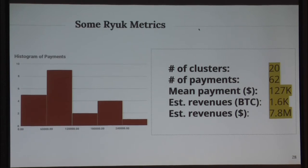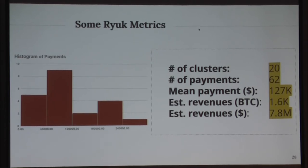From 38 Bitcoin addresses, we formed 20 clusters — a high cluster-to-seed ratio indicating wallet efficiency to hide attribution. The 62 payments observed had a mean of around $130,000. Estimated revenues using our methodology were approximately 1,600 Bitcoin, which converts to around $7.8 million — roughly two times higher than CrowdStrike's estimate, likely because CrowdStrike did not use the clustering methodology to approximate the Bitcoin wallet. Ultimately these are all estimates, and it would be interesting to compare methodologies.